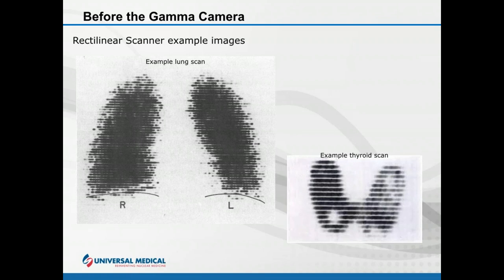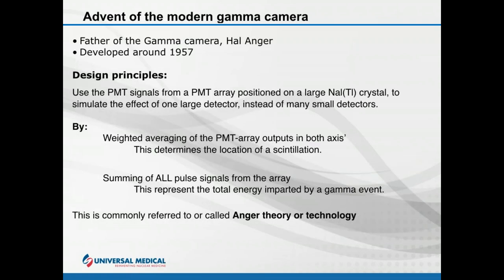In about 1957, Dr. Hal Anger developed the principles of the modern gamma camera. What Dr. Anger came up with was using PMT signals — photomultiplier signals — from an array of multiple photomultipliers positioned on a large sodium iodide crystal. The purpose is to create one large detecting element instead of many small ones. A weighted averaging of the PMT array outputs determines scintillation location, and the summation of all PMT outputs determines gamma energy. This is often called Anger theory or Anger technology.